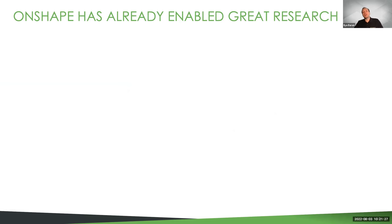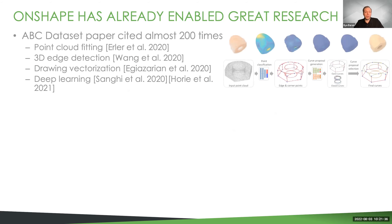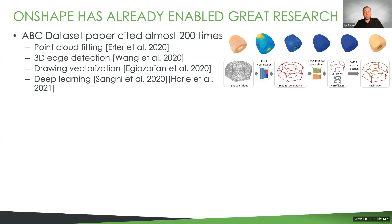Everything I've talked about has been available for a couple of years now, and we're starting to see the results of research groups taking advantage of it. The ABC dataset was released in 2019 and the paper already has almost 200 citations. The data has been used to design new algorithms for fitting to point clouds, for detecting edges in point clouds, to vectorize drawings, and to explore generally how deep learning can work with these types of 3D shapes.